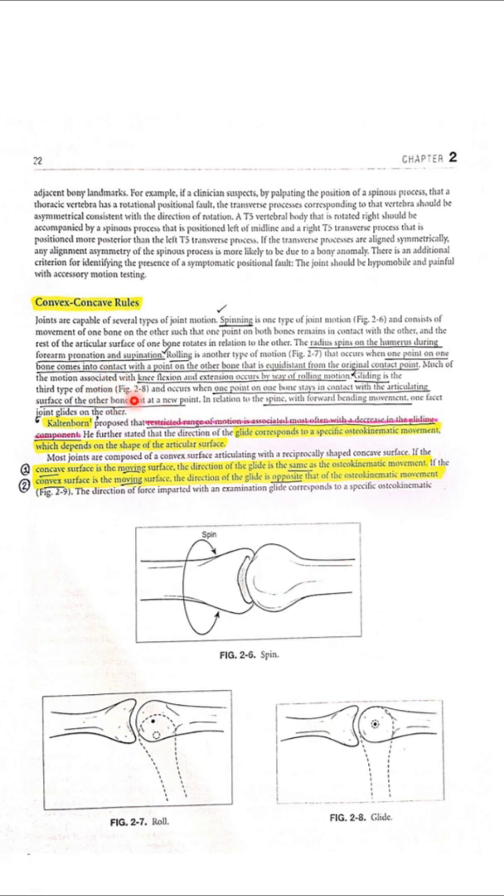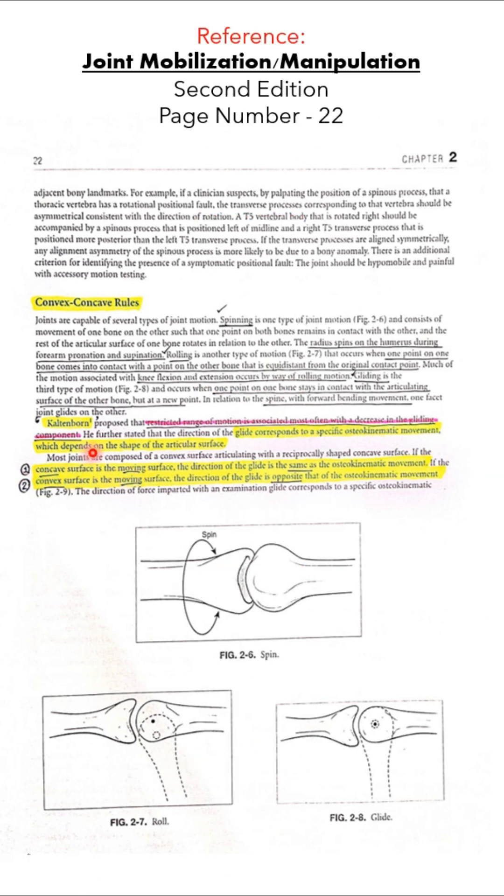Kaltenborn proposed the mechanism of this joint movement which is called the convex-concave rules. He also mentioned that restricted range of motion is associated most often with a decrease of the gliding component.